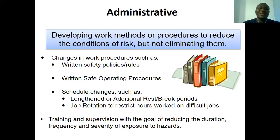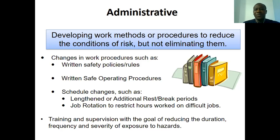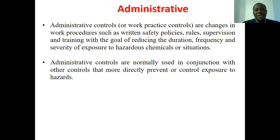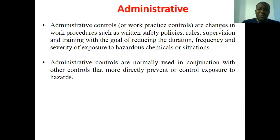Administrative controls deal primarily with work procedures and methods — changing schedules, changing task loads, training, and supervision — with the goal of reducing the duration, frequency, and severity of exposure to hazardous chemicals or situations. Administrative controls are changes in work procedures such as written safety policies, rules, supervision, and training. They are normally used in conjunction with other controls that are more directly effective in preventing or controlling exposure to hazards.